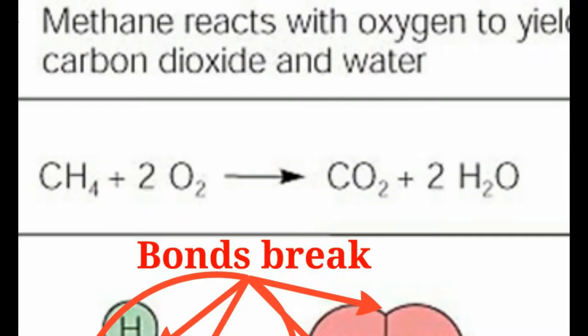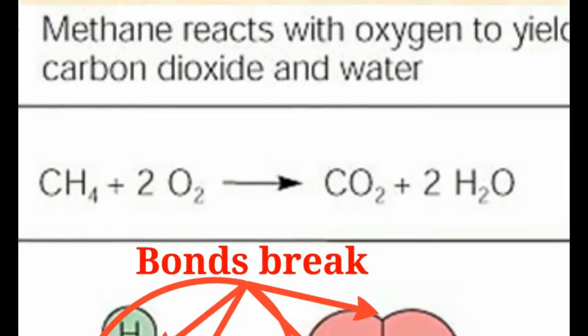Now we need to talk about what these numbers in the front are. Those are the coefficients we talked about last unit. That's balancing — we're going to talk about balancing here in a little bit.